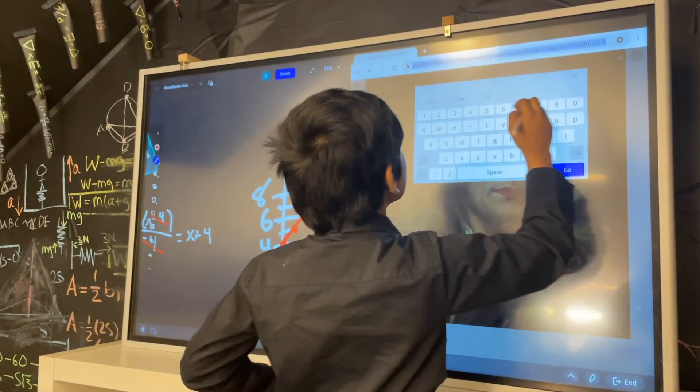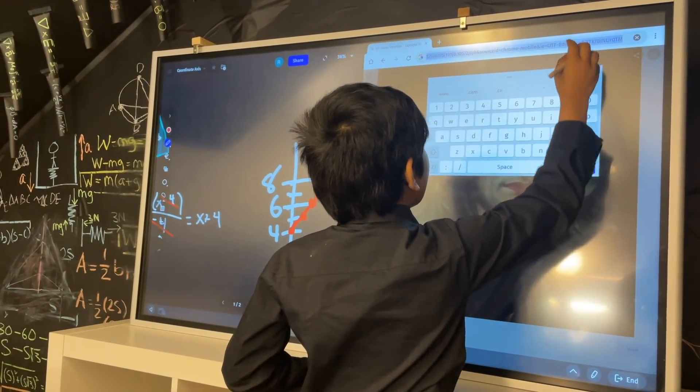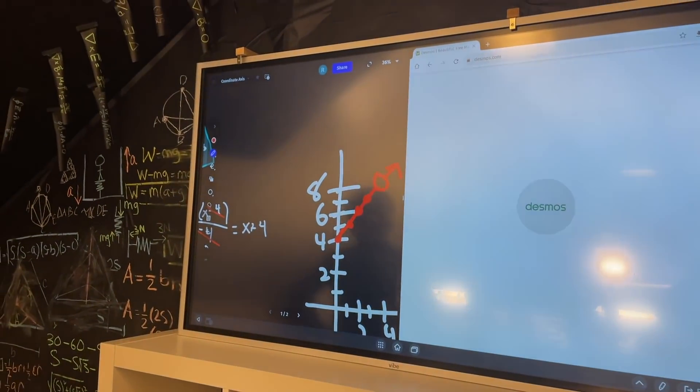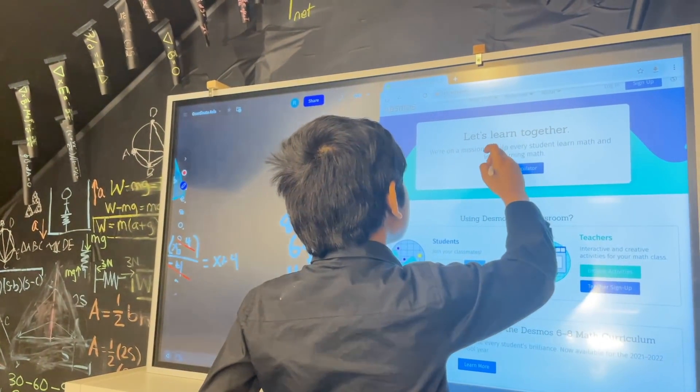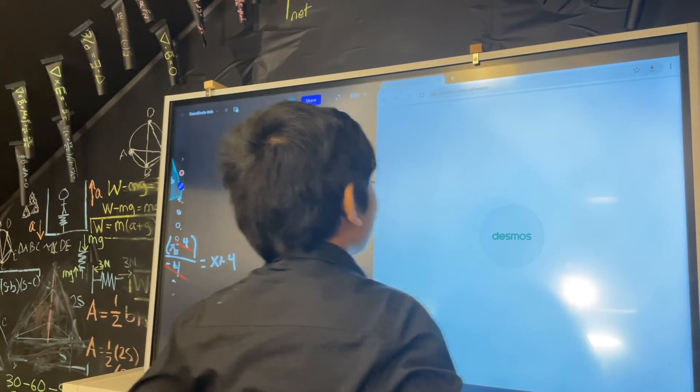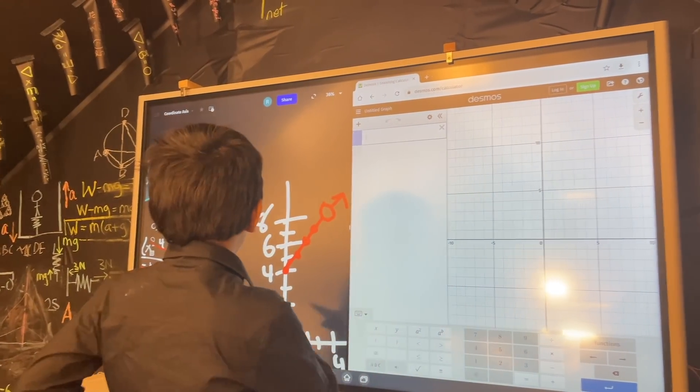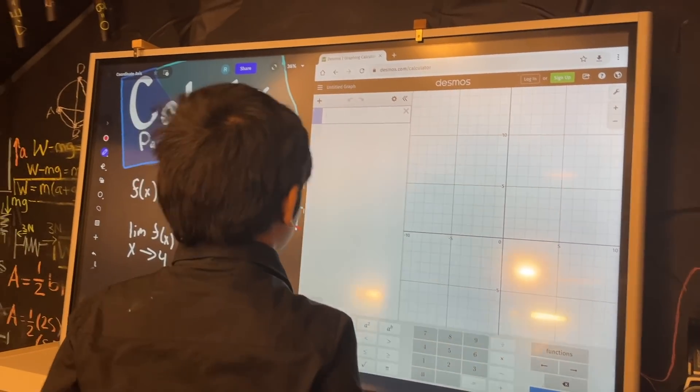Okay, so, well, Desmos graphing calculator. There we go, second time's the charm I guess. So if we graph the equation I just showed you, this is what you get.